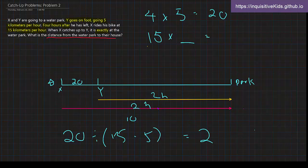So now that we have 2 hours right here, that would be the time. So we would do 15 times 2, which equals 30. So what is the distance from the water park to their house? That would be 30 kilometers.